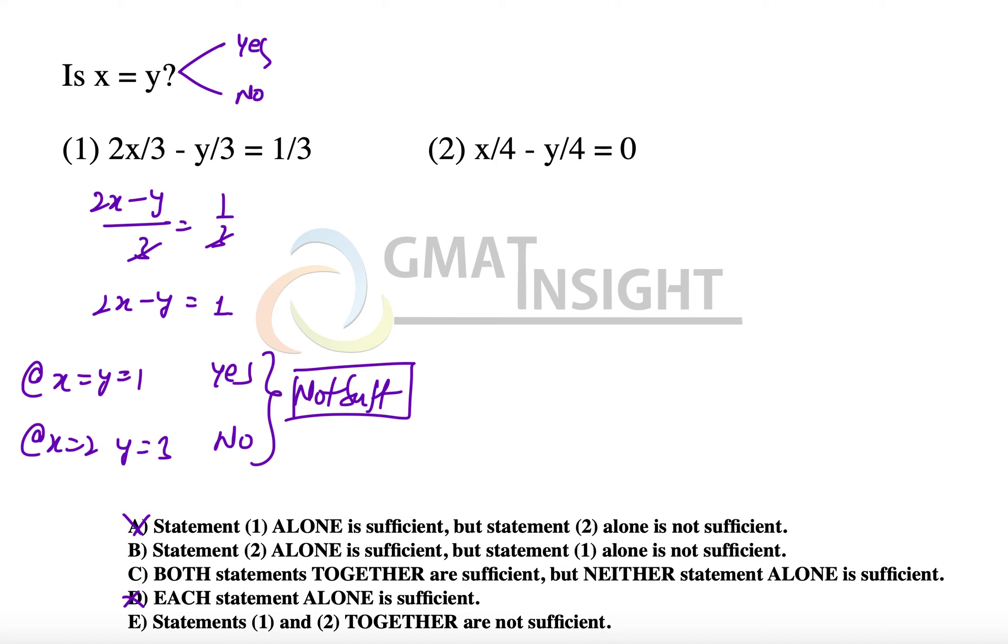Option A and option D are out. Let's check the second statement now. The second statement says that x by 4 minus y by 4 is equal to 0, which means x by 4 is equal to y by 4. 4 gets cancelled out.